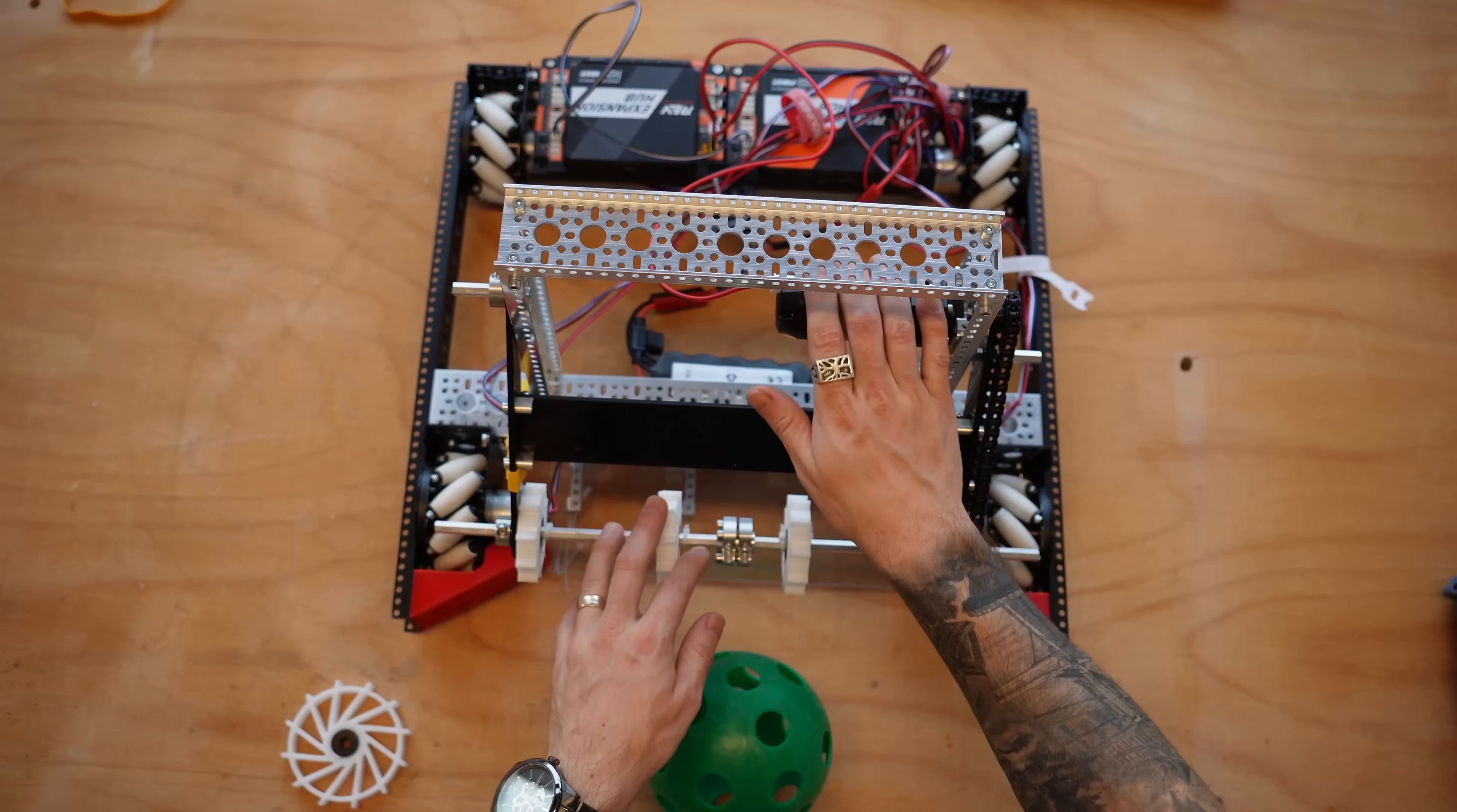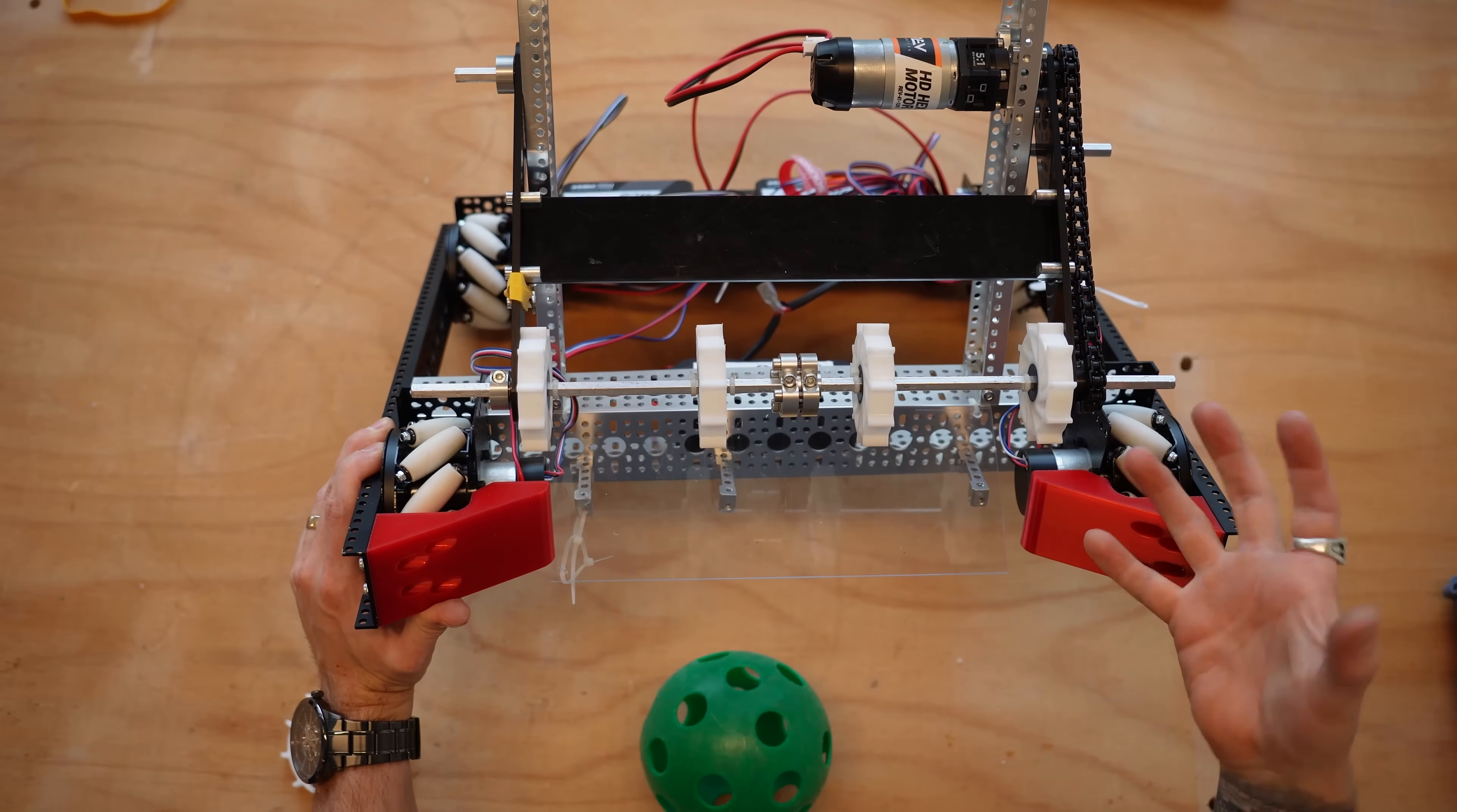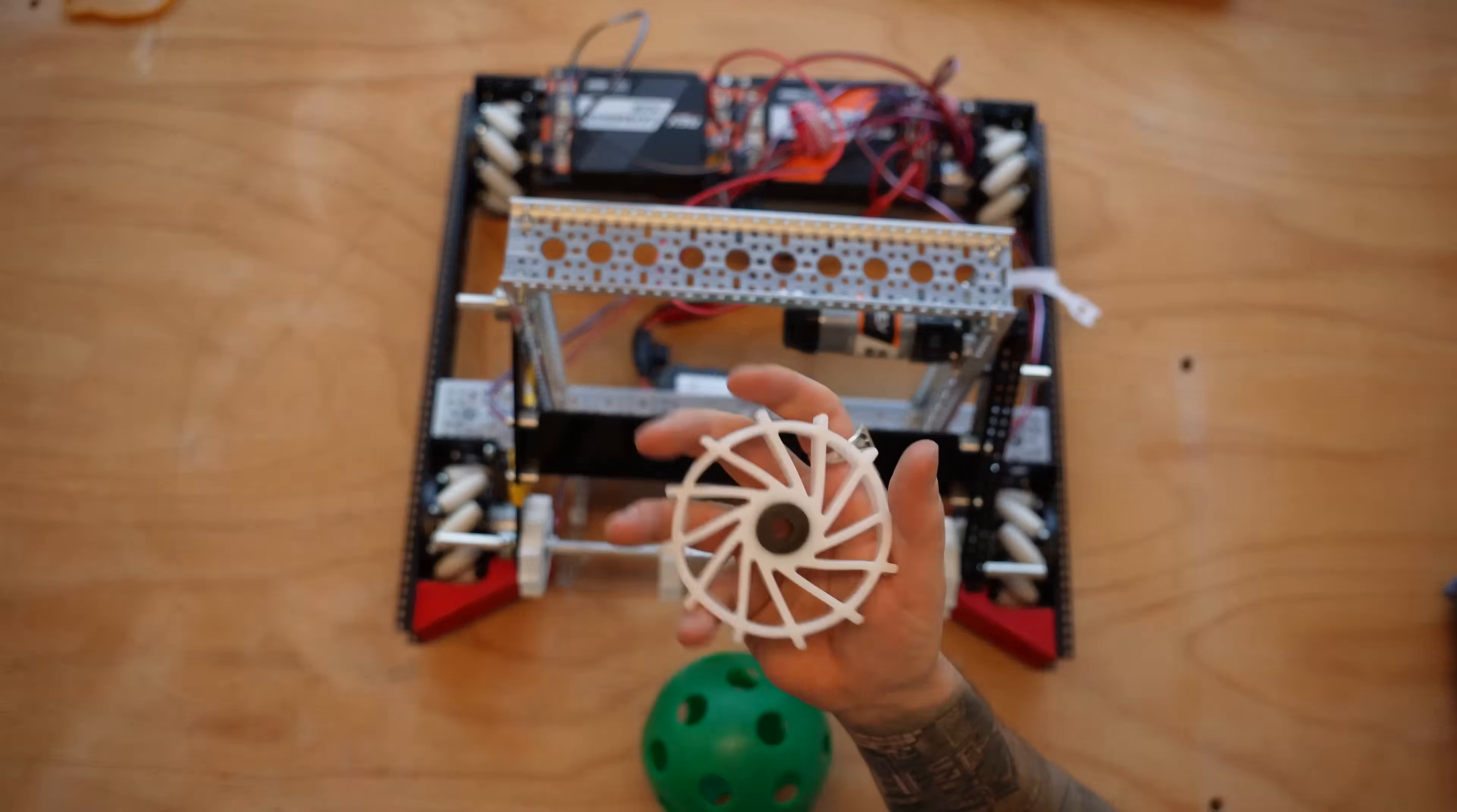Now, in terms of the motor that you want running this thing, I have an ultraplanetary from Rev. It's running on a 5 to 1 ratio. Because my wheels are running at 450 RPM. And you typically want your intake running at twice the speed of your wheels, so you can grab the game element and then own that element. So this is spinning at about 1200 RPM, whereas these are spinning about 450. I'd like to actually lower this a little bit to get about 900 to get a little bit of extra torque on the system, but it works pretty well for what it needs to do.